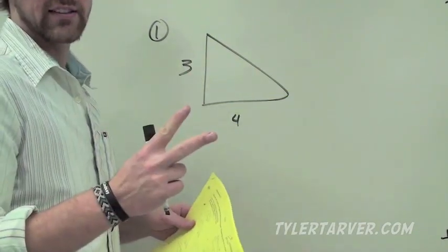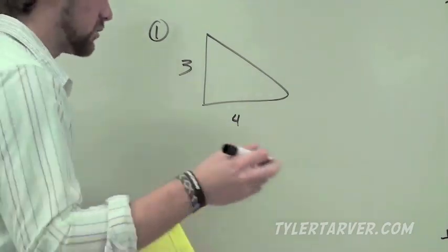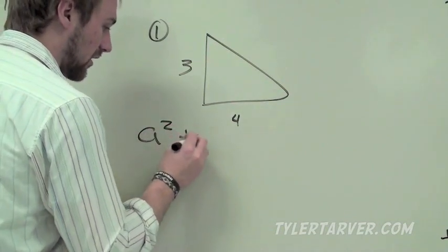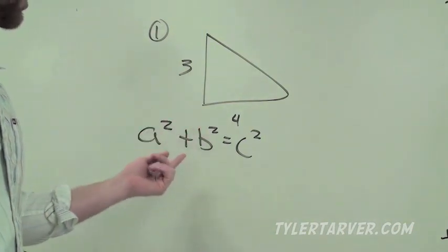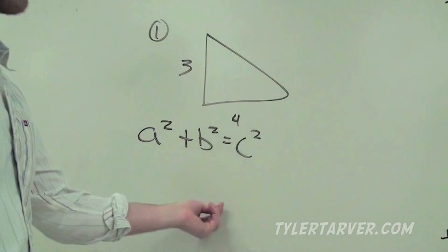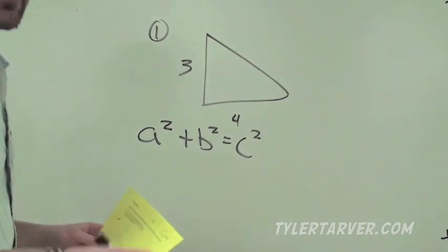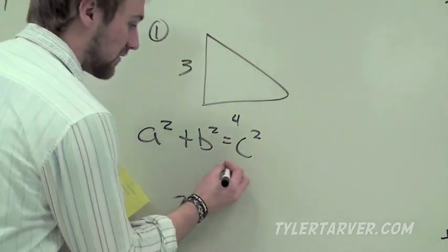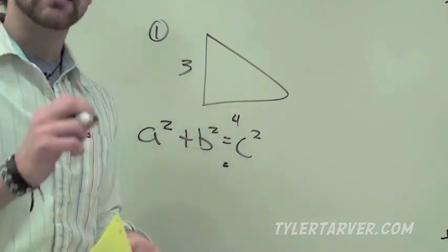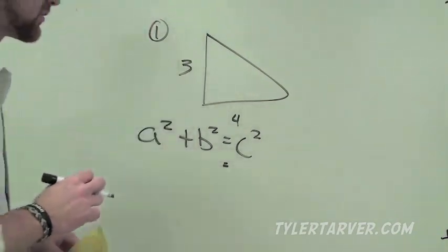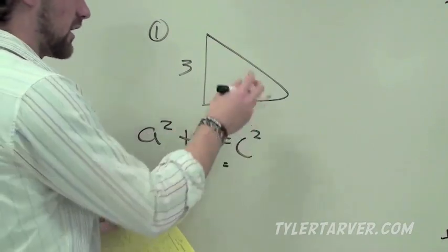First thing we want to do — it's a right triangle, we have two sides. When you have two sides of a right triangle, you find that third side using the Pythagorean Theorem. We've used this before to figure out if a triangle was acute, obtuse, or right. Now they've already told us it's right, so we use it to find the other side. c always represents the hypotenuse — that's important. Here, the hypotenuse is not given, so that's our x.